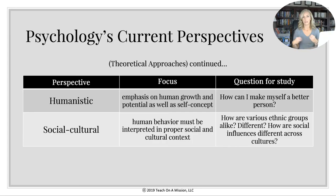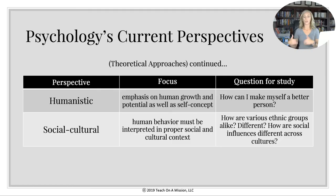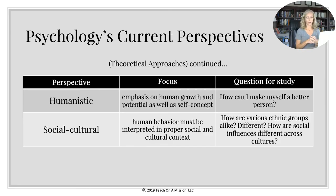Social-cultural perspective — the buzzwords are essentially social and cultural — they're looking at groups. How family influences you, your peer group, your neighborhood. Human behavior must be interpreted in proper social and cultural context. They'll be looking at demographics like racial and ethnic groups, socioeconomic groups — how various ethnic groups are alike or different and how that influences individuals across cultures.